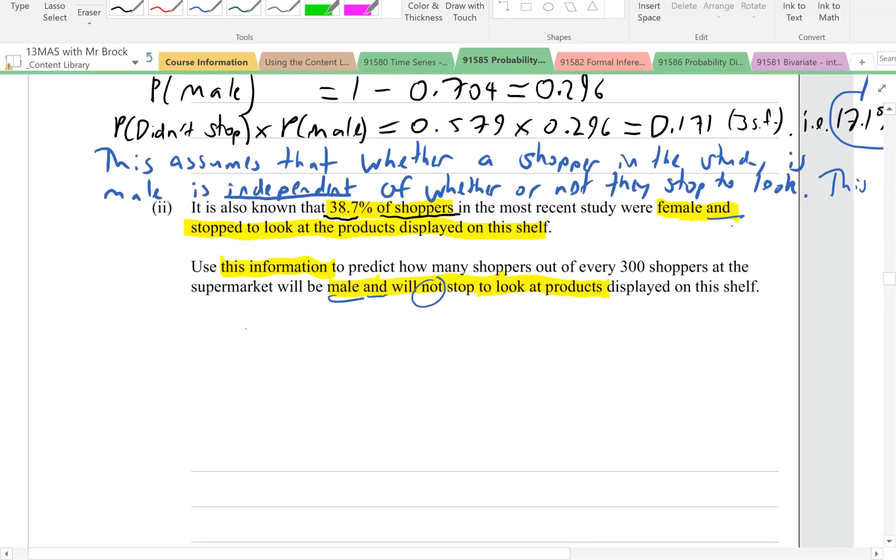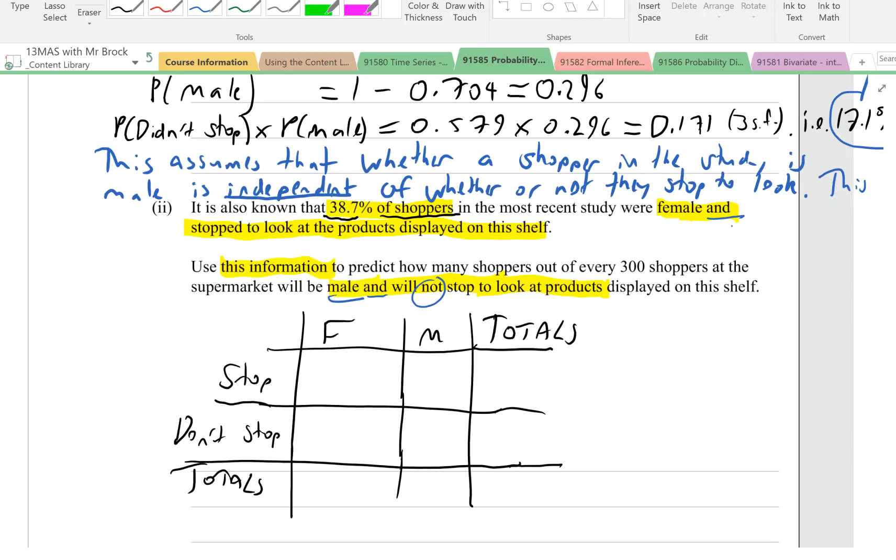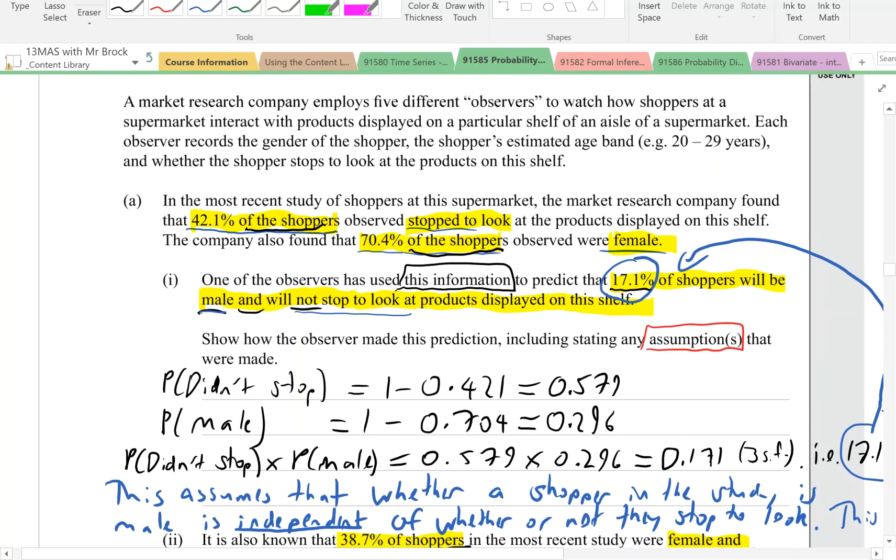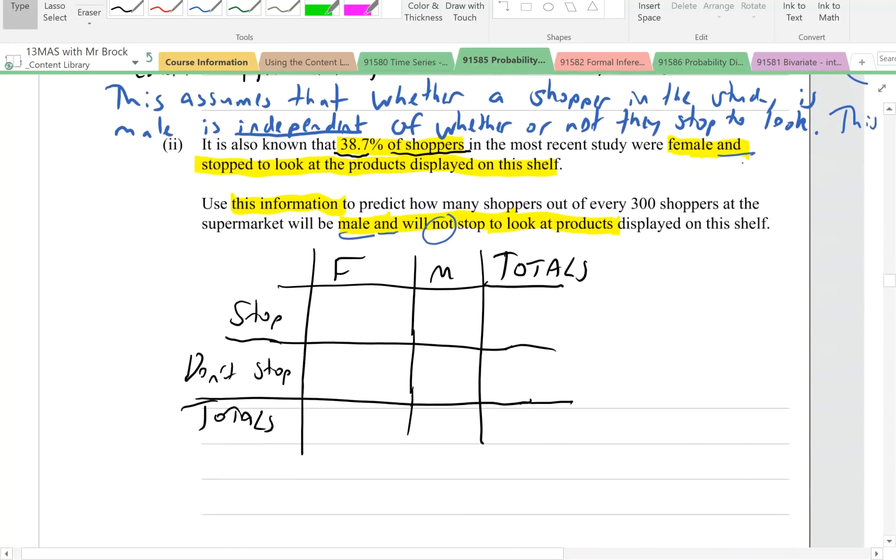Let's draw that up. We are dealing with female and male, and stop or don't stop to look at the products. If we go back to the first part of the question, we're told that 42.1% of the shoppers stop to look. So that's going to go in the total for stopping to look, 0.421. I'd like you to pause the video and see if you can fill in the rest of those cells in that table.